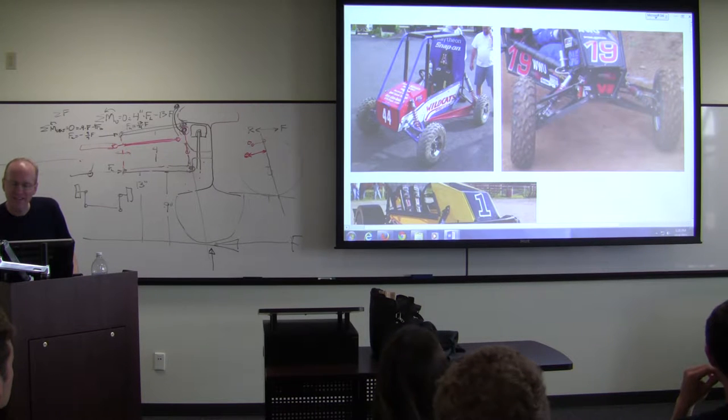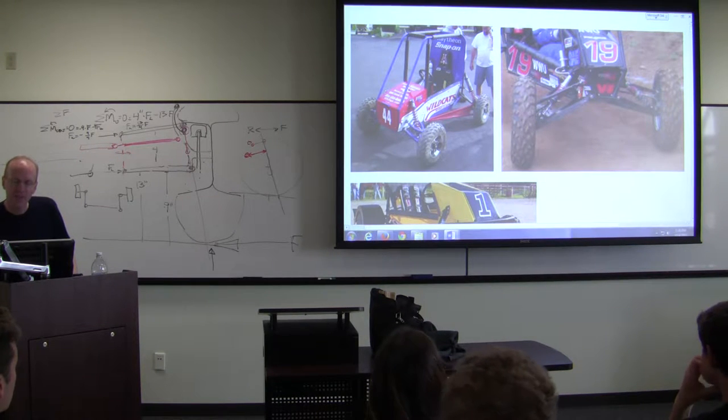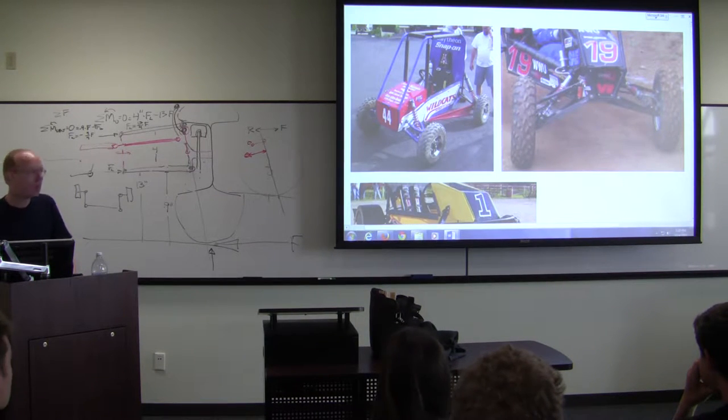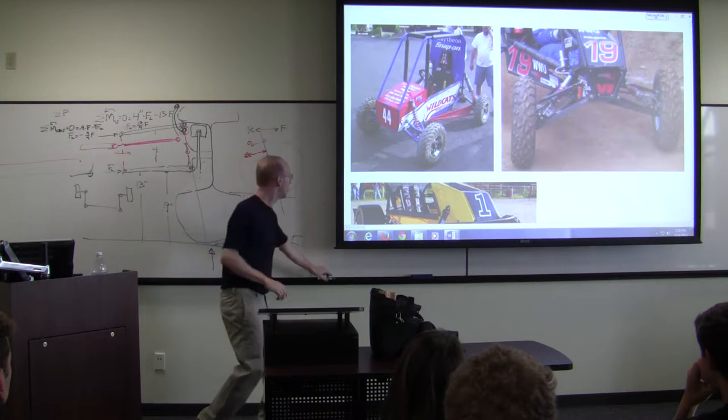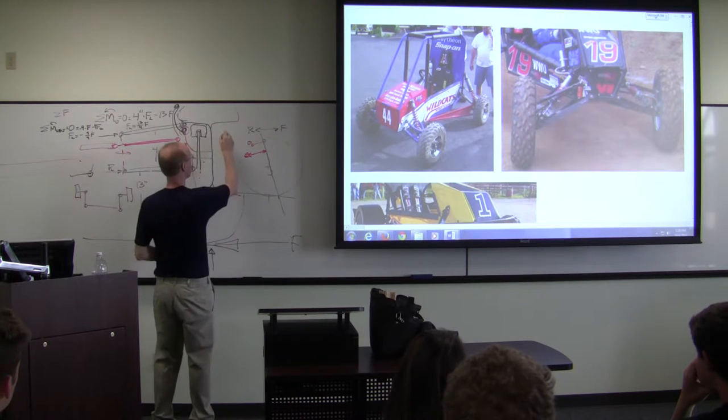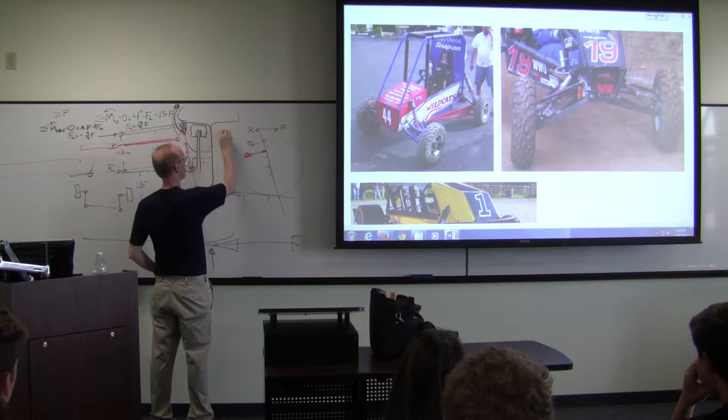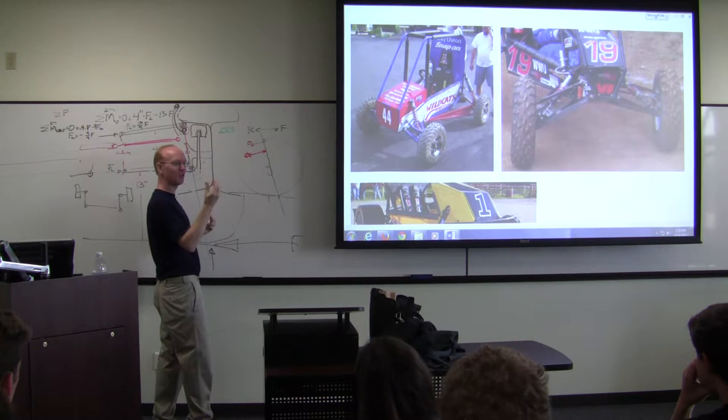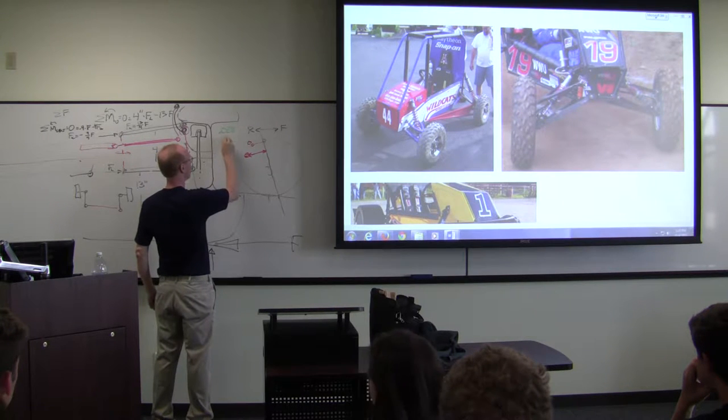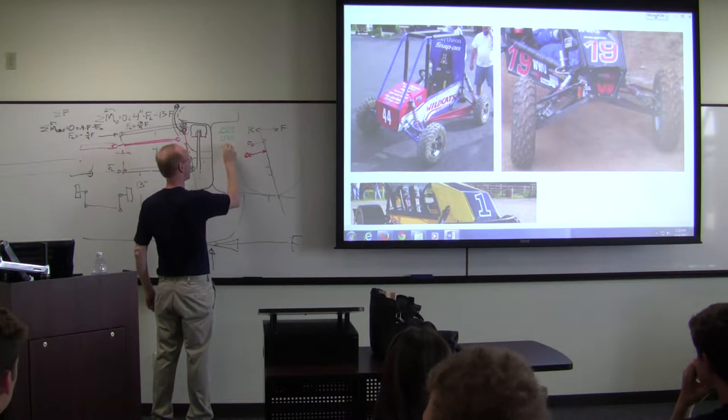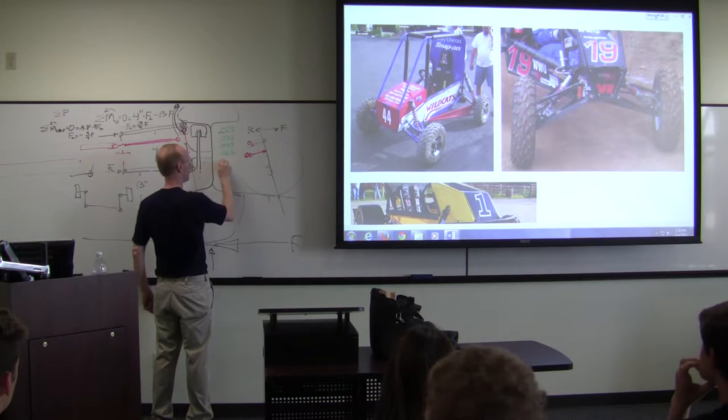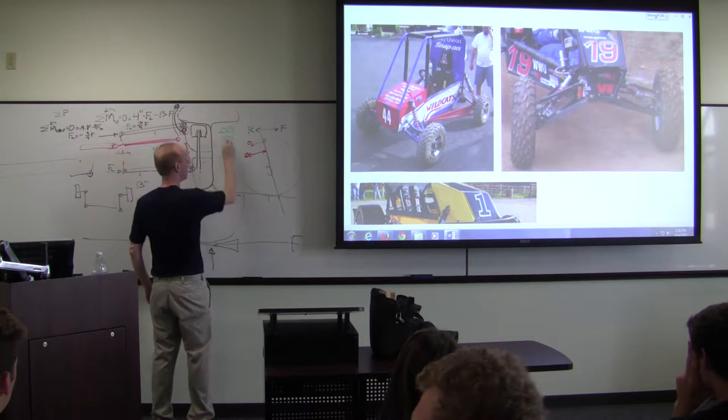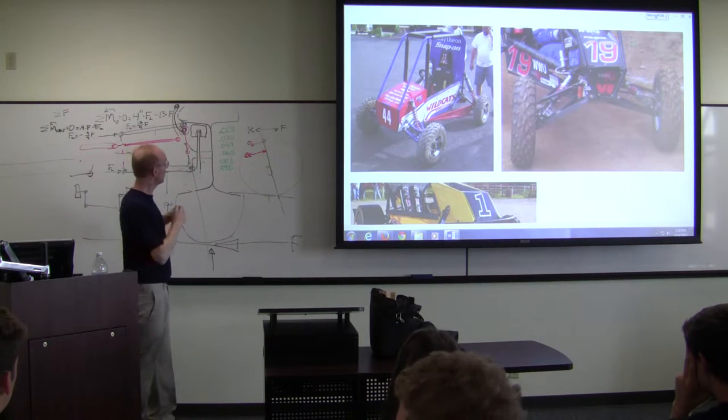So this arm has a dent in it right here. That's probably because it's a very thin wall tube. Tubing comes in gauges: 028 is very thin wall, so thin you can almost squeeze it and feel it move. The next step, then 035, 049, 065 or 060, 083, 090. Those are your typical wall thicknesses.